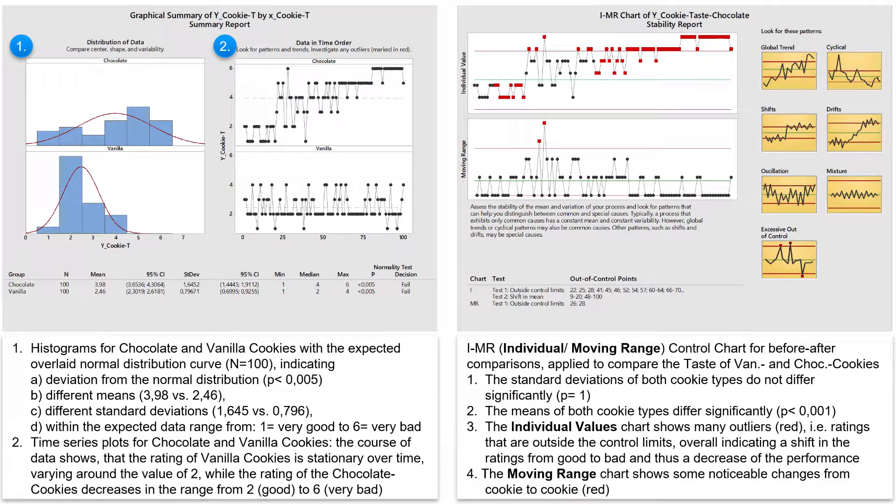If I choose the upper control limits of the controlled process for vanilla cookies and set the lower control limit to zero, then the bad performance of the chocolate cookies becomes clearer, with even more outliers above the UCL.